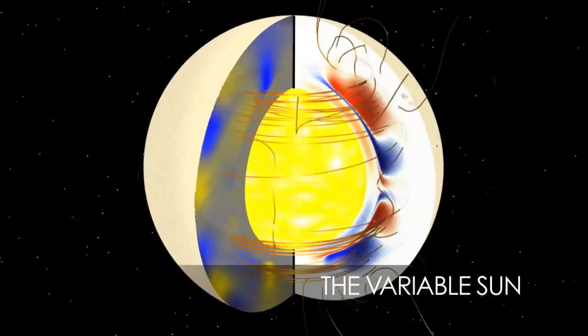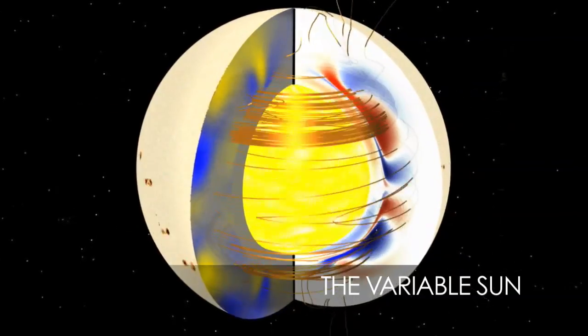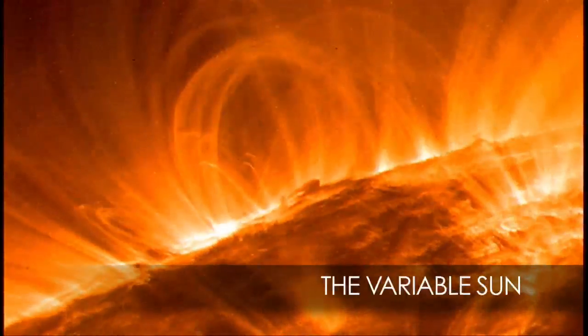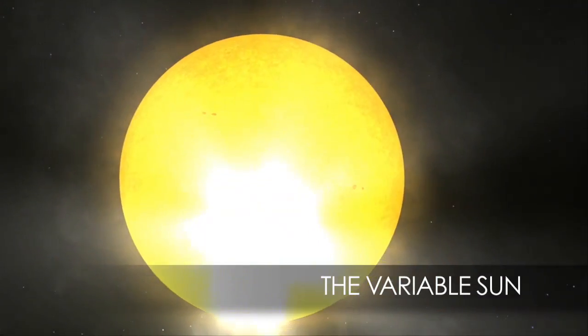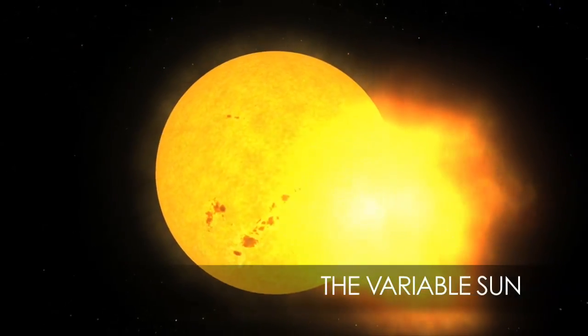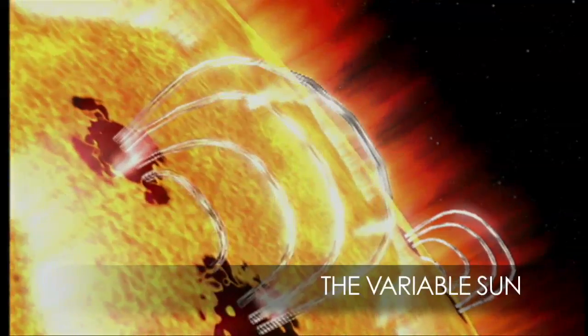But what causes the Sun to vary so much? A closer look at its structure may reveal the answer. Studying the magnetic field and surface activity such as sunspots, solar flares, and coronal mass ejections may provide vital clues.